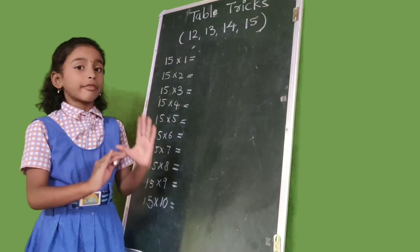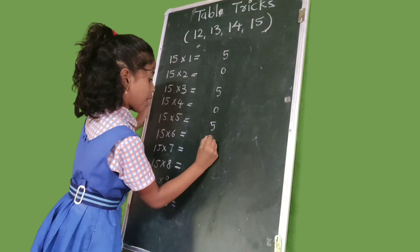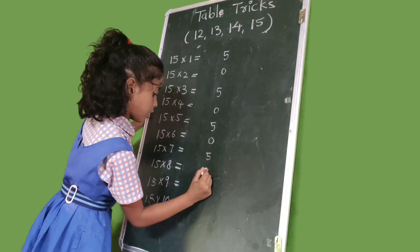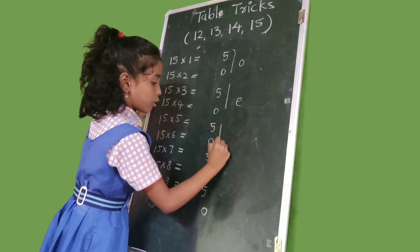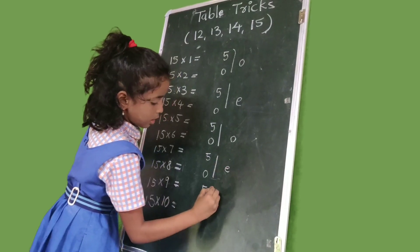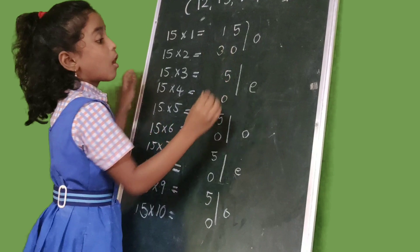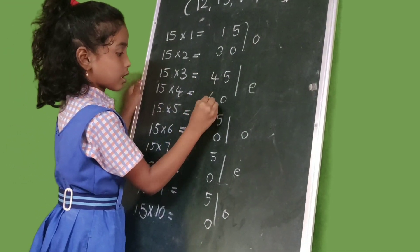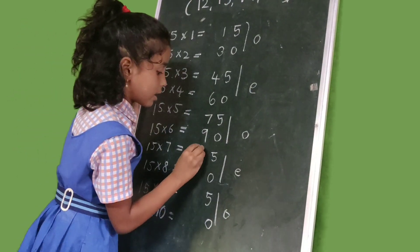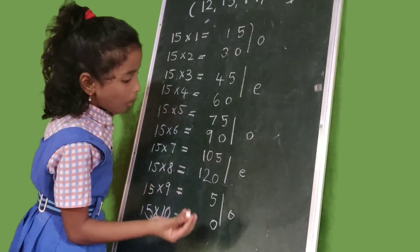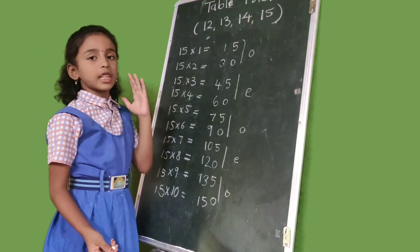Now 15 table trick. We write 5, 0 and 5, 0 repeating for 10 rows. Then we write odd numbers: 1, 3. After 3, even numbers: 4, 6. After 6, odd numbers: 7, 9. After 9, even numbers: 10, 12. After 12, odd numbers: 13 and 15. Friends, this is the 15 table trick.